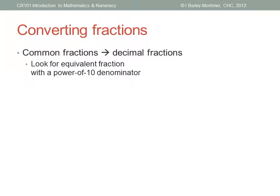What about going the other way? How do I convert a common fraction into a decimal number? Just look for an equivalent fraction with a denominator that's a power of ten. Three-fifths. Well, five goes into ten twice, so use tenths. Three times two is six. Six-tenths, which is zero point six.